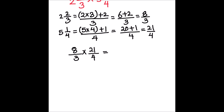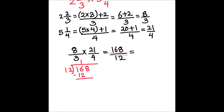Eight times twenty-one is one hundred sixty-eight, divided by three times four which is twelve. Let's divide to find the mixed fraction: one hundred sixty-eight divided by twelve. Twelve times fourteen is one hundred sixty-eight, so the remainder is zero and our answer is fourteen.